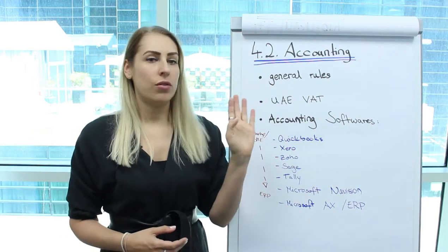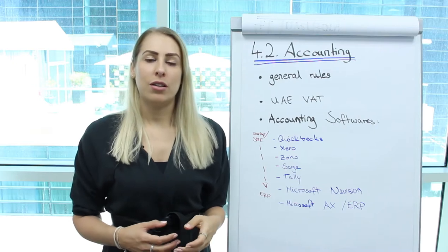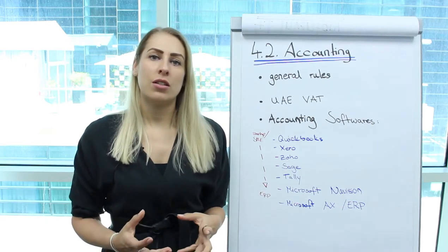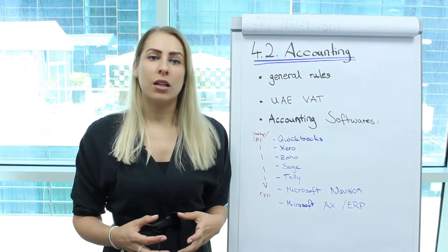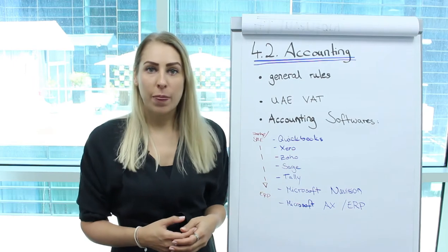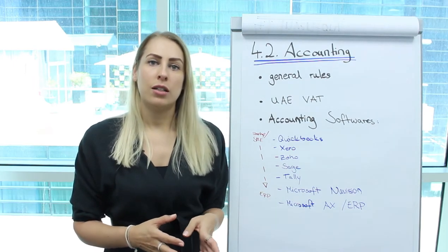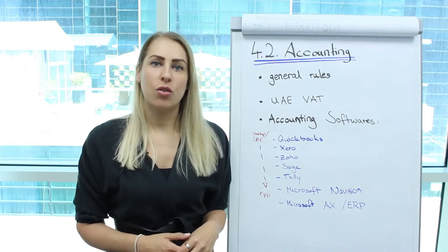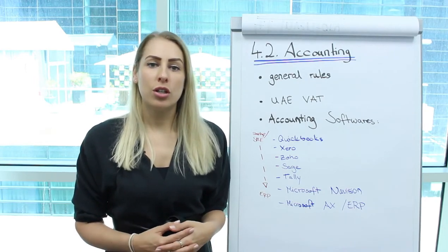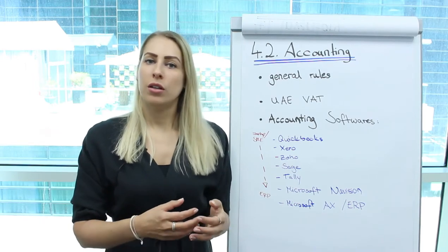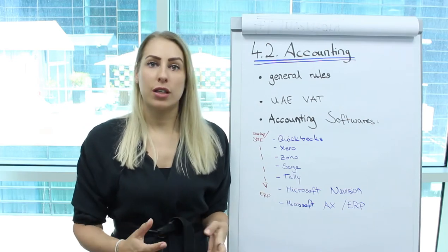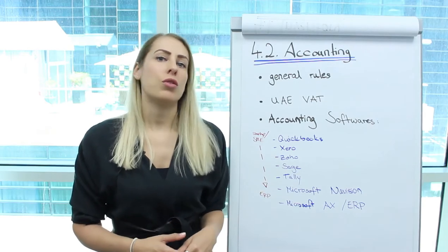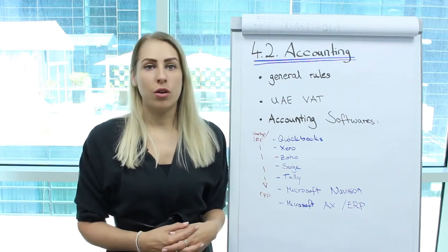In terms of general rules, accounting is administered within the Ministry of Economy in the UAE — a centralized government body that governs these rules. The financial year runs from 1st January to 31st December. We also have a five-year bookkeeping regulation, meaning we must keep invoices, contracts, and any business-related documents for five years, either digitally or printed.